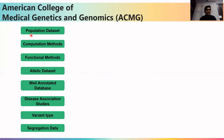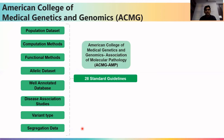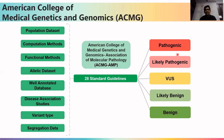By combining population datasets, computational methods, functional datasets, well-annotated databases, genome-wide association studies, and segregation datasets, we can classify variants consistently. This is what ACMG has done — combining all these datasets into 28 standard guidelines for variant interpretation. Using these 28 guidelines, variants are divided into five categories: pathogenic, likely pathogenic (80% certainty of causing disease), variant of uncertain significance (VUS), likely benign, and benign.